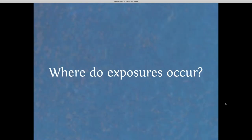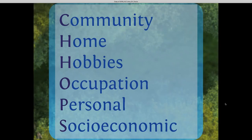We're going to visit a little home here in a moment on the slide presentation to look at where certain exposures occur. The helpful memory here is CHOPS. We're going to briefly go through some of these things: Community, Home, Hobbies, Occupation, Personal and Socioeconomic. If you're seeing a patient in a clinic and you want to do an environmental health history, this is a helpful acronym to think through. There are different tools that you can use to do so — we'd be happy to connect you with those.